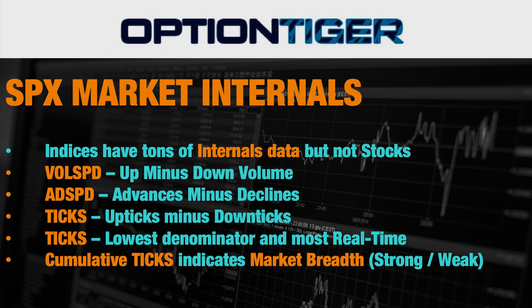Then you have advances minus declines, the ADSPD. All of these try to give you a sense of the breadth of the market. When I say breadth, it's not just what one stock is doing or what one index is doing — it's what the internals of that index are doing. So in the case of the S&P 500, we're looking at 500 stocks.